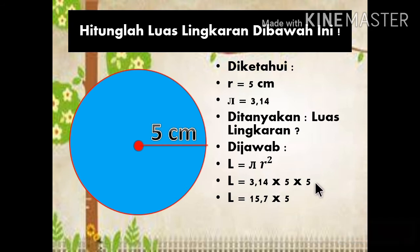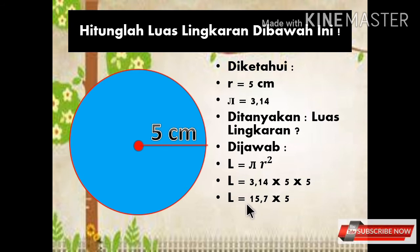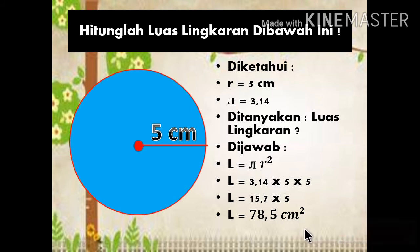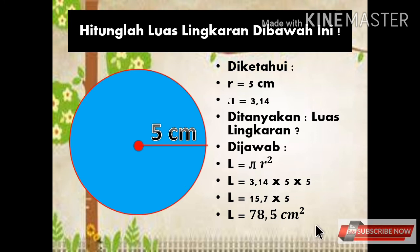3,14 × 5 = 15,7. Kemudian 15,7 × 5 hasilnya adalah 78,5 cm². Bagaimana? Mudah sekali bukan? Kalian sudah bisa? Sudah memahami?